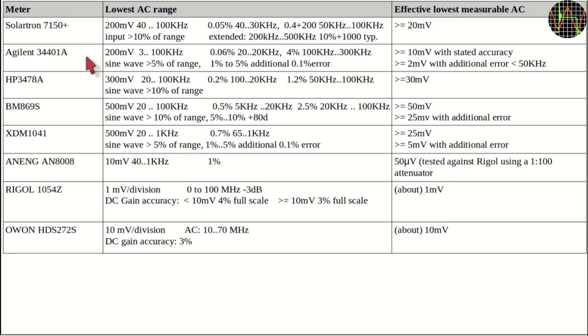For the 34401A, it is much the same. 10 mV at least to be in spec. At a crunch, 2 mV with additional error, but you have to use less than 50 kHz. The same is true for all other meters.